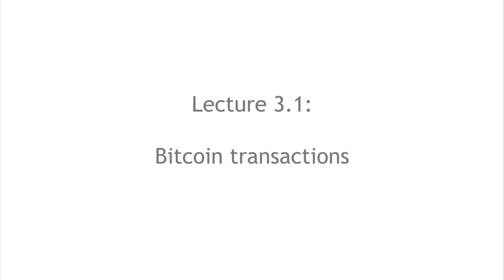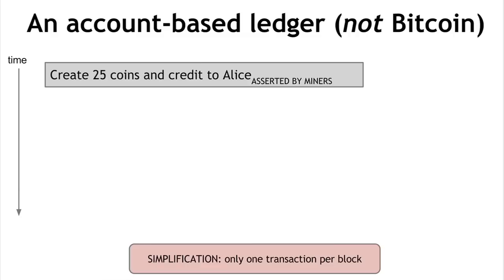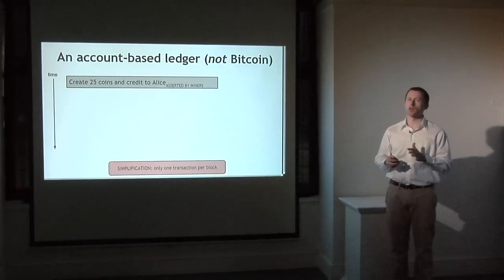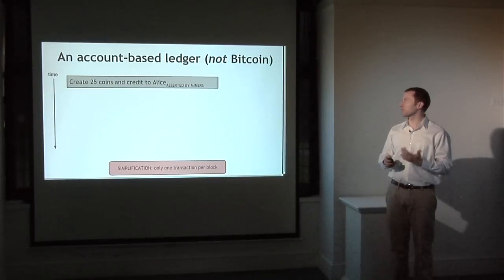We'll start by looking at transactions in Bitcoin. Transactions are really the fundamental building block which the whole currency is going to be based on. We have this append-only ledger, and as time goes on we just add more and more units to it. We'll take a simplified model where instead of having blocks we just have individual transactions being added to the ledger one at a time. So how can we build a currency this way?